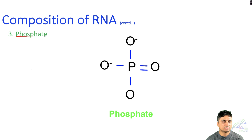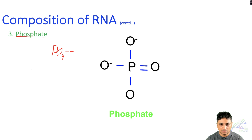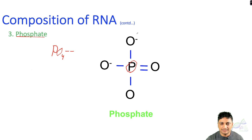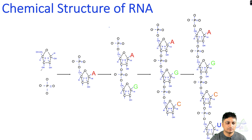The third component of RNA is the phosphate group, or phosphodiester bond. It is PO4 with two negative charges — one phosphorus atom bonded with four different oxygen atoms. One end of the phosphodiester bond is attached to the 3' carbon of the ribose sugar, whereas the other end is attached to the 5' carbon of the ribose sugar.